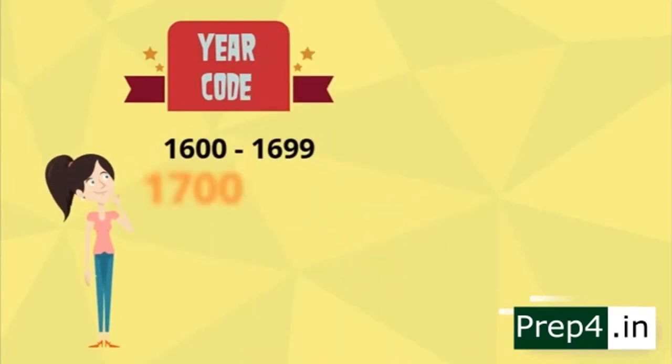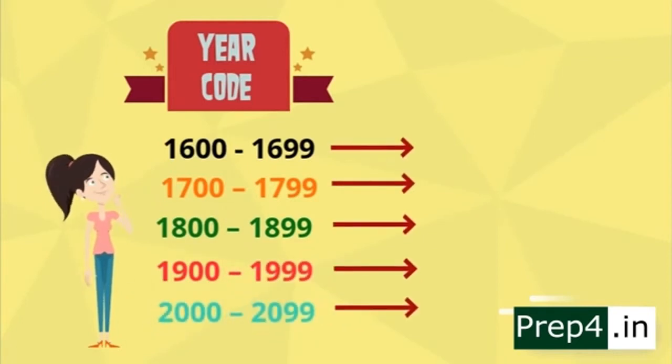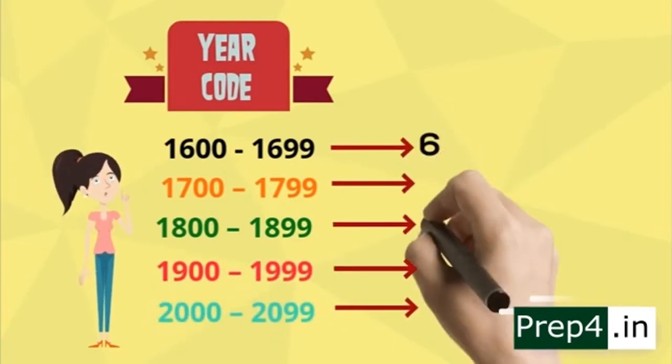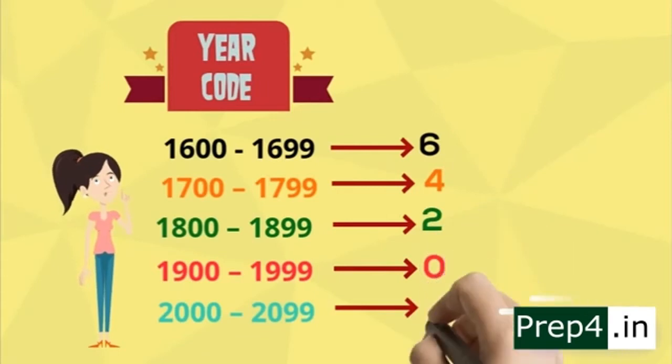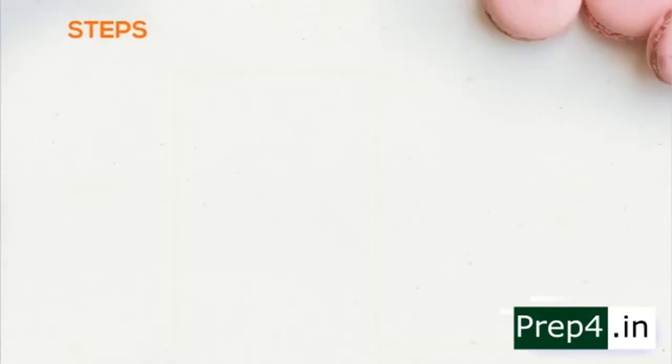Next, we will code the years. These are the various years which are generally asked. Here we have five groups and the numbers are 64206. So now we have got the tricks to do it. Now let's see how to apply and do it.